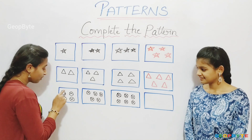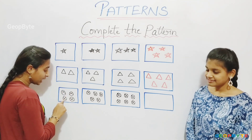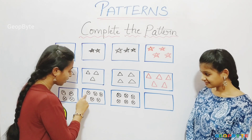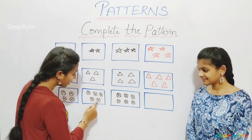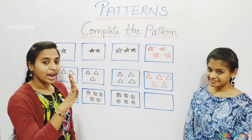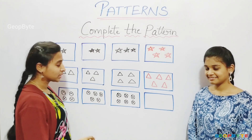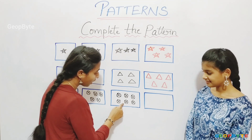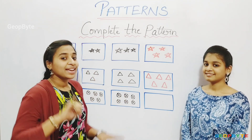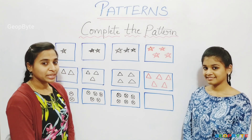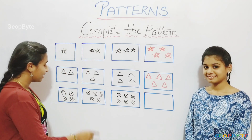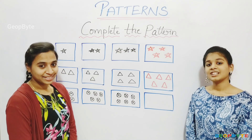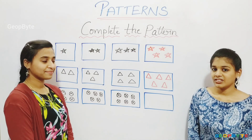Now let us go with this sequence: 4 wheels in this box, 5 wheels in this box, 6 wheels in this box. How many wheels will come in this box? 4, 5, 6, and 7. Let us draw 7 wheels.